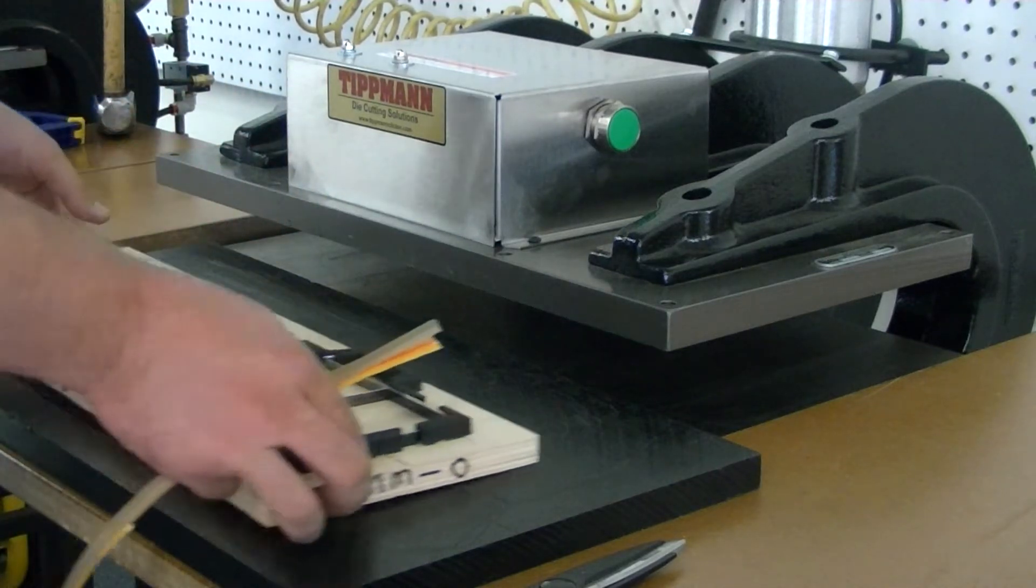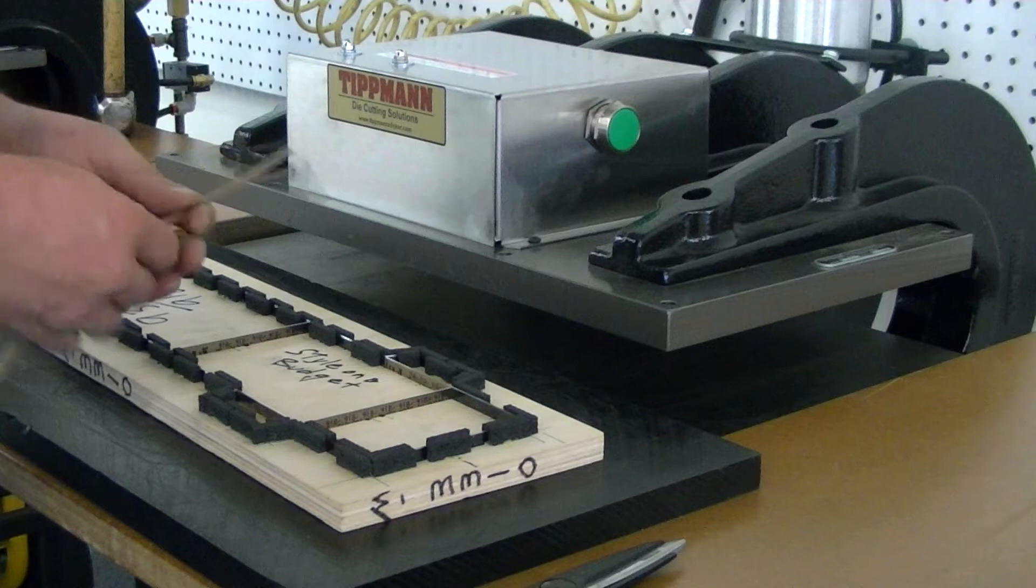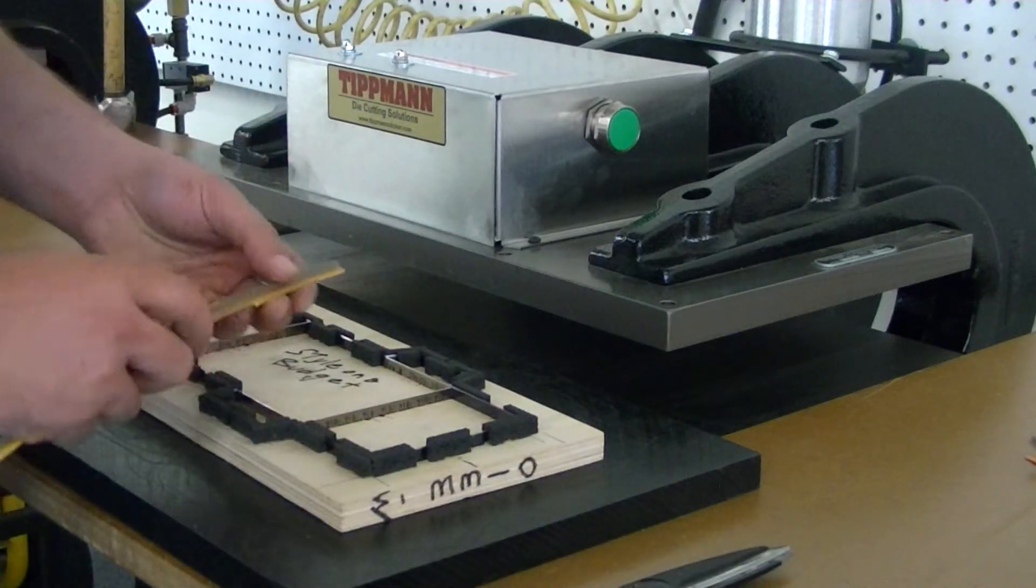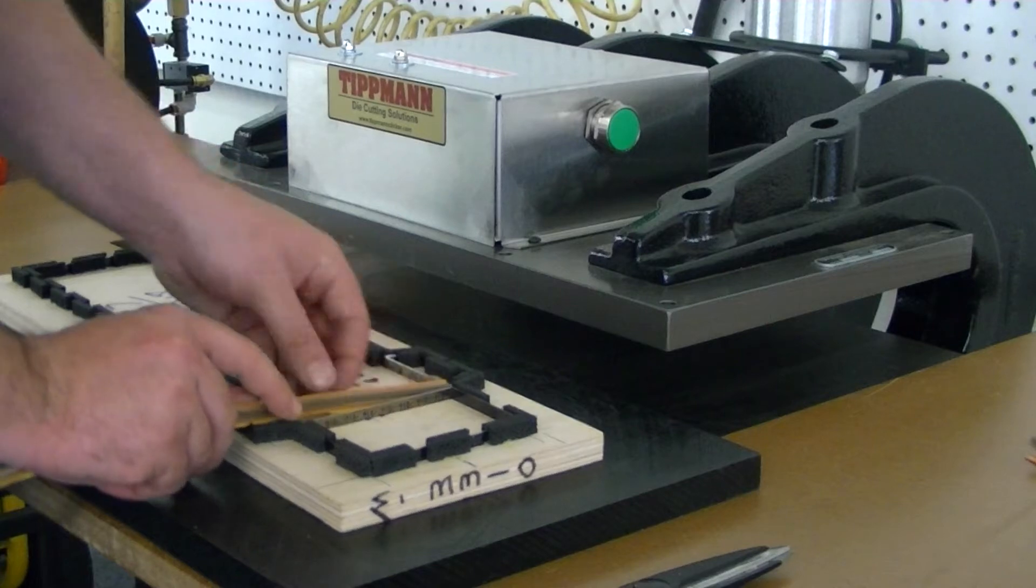Now, to set it up on your machine, it takes some setup. But basically, you fit your die with this matrix anywhere that there's creasing blade.